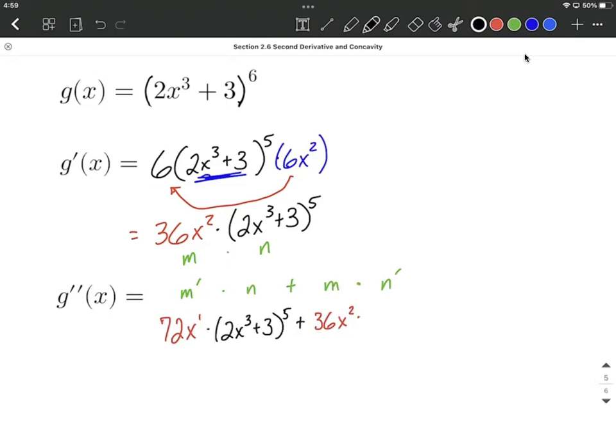I'm going to focus on the outer function, bring the 5 down, reduce the exponent by 1, keep what's on the inside the exact same for the time being, but then we have to multiply by the derivative of this inner function. We haven't done anything with that inner function yet, its derivative is going to be again 6 x squared.